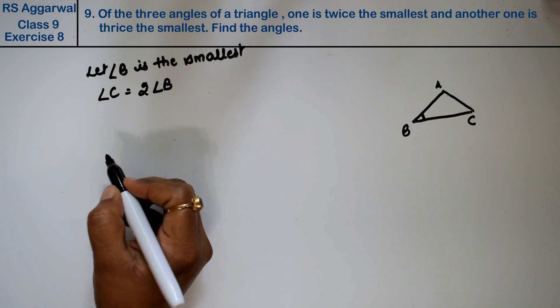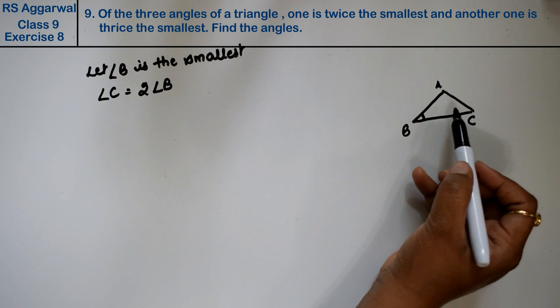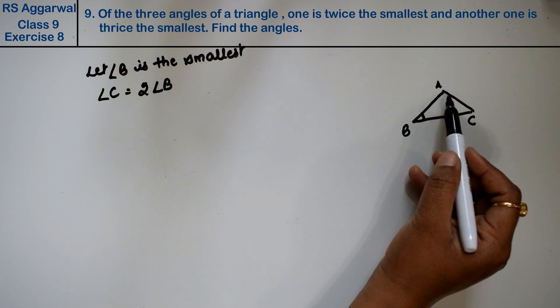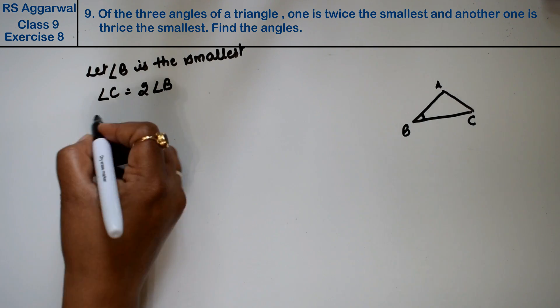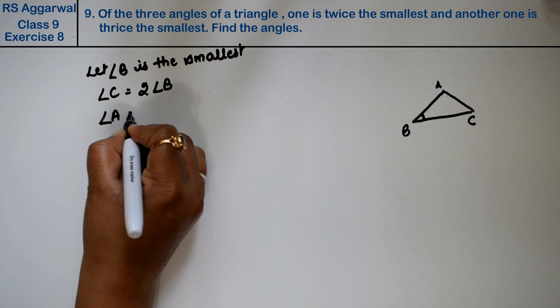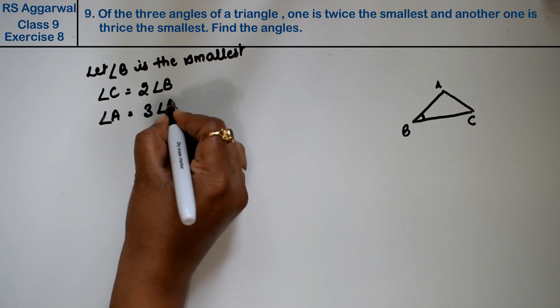Another is thrice the smallest, so angle A is three times angle B. So we have angle B as the smallest, angle C is twice the smallest, and angle A is thrice the smallest.